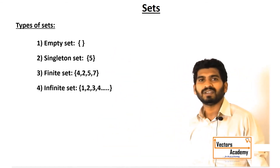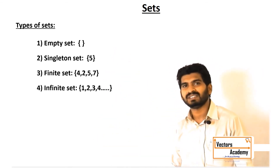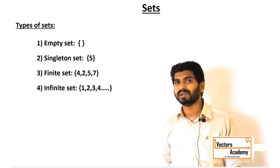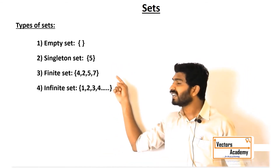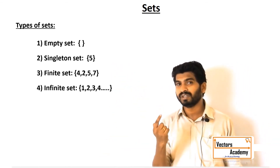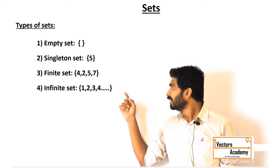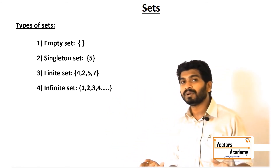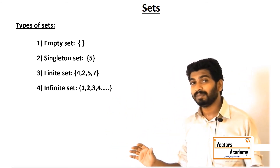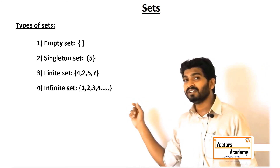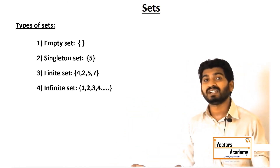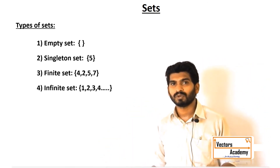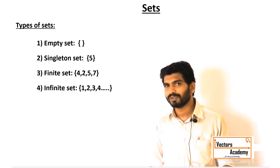The name itself is a definition of these sets. The first one is an empty set which does not contain any element. The second is a singleton set which contains just one element. The third is a finite set which contains a finite number of elements which can be counted, whereas the last one is an infinite set which contains an infinite number of elements — uncountable.